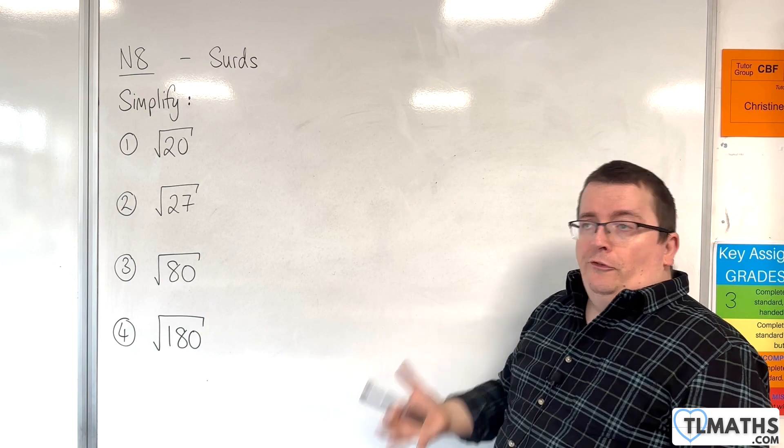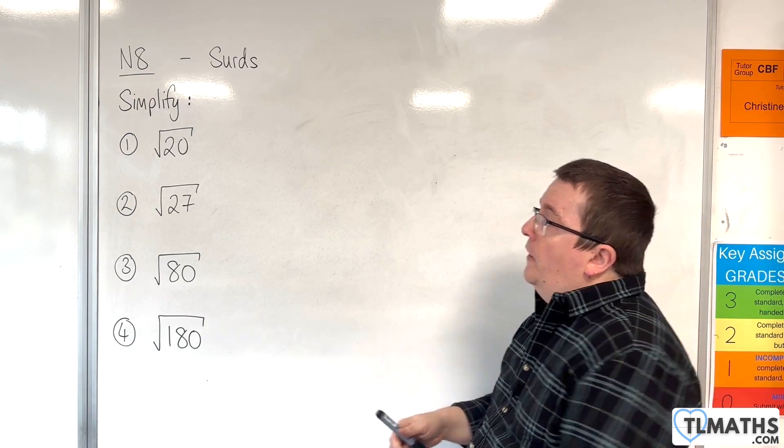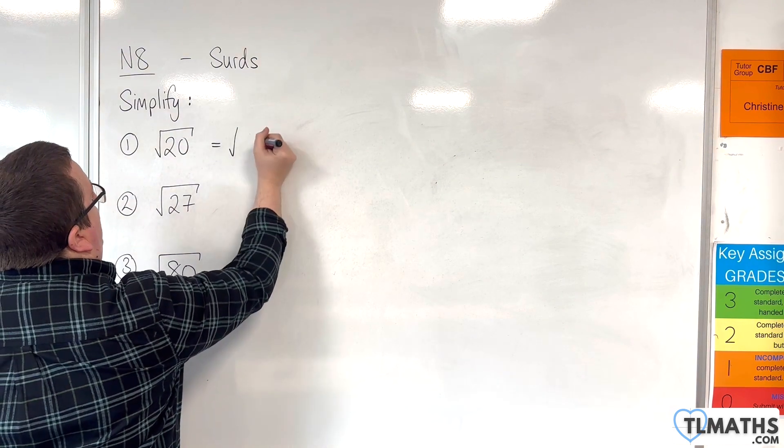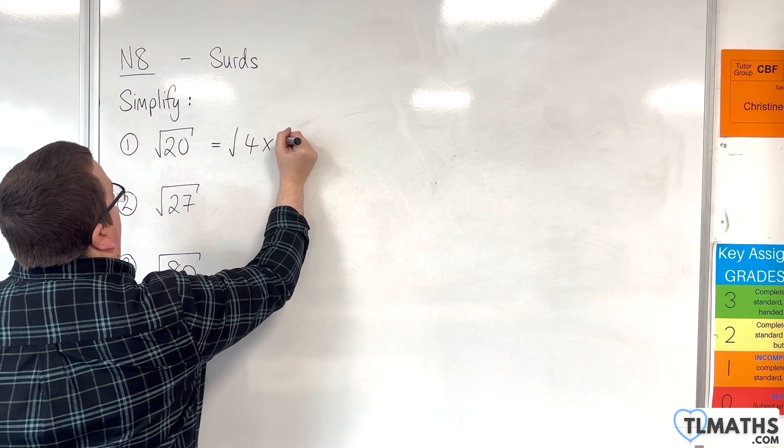So that would be 4. 4 goes into 20 5 times. So I can write the square root of 20 as the square root of 4 times 5.